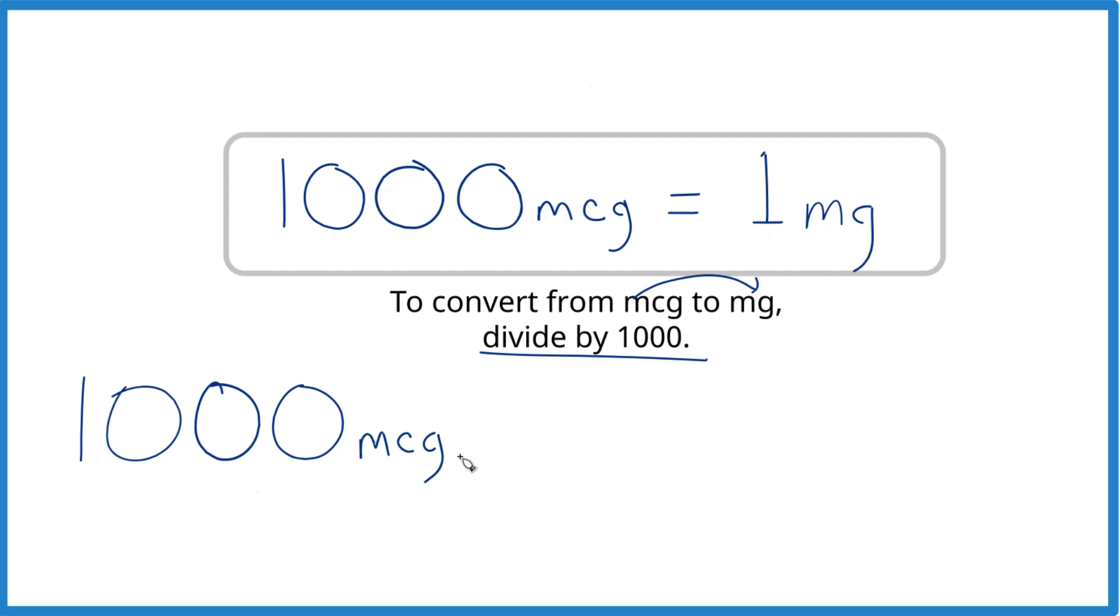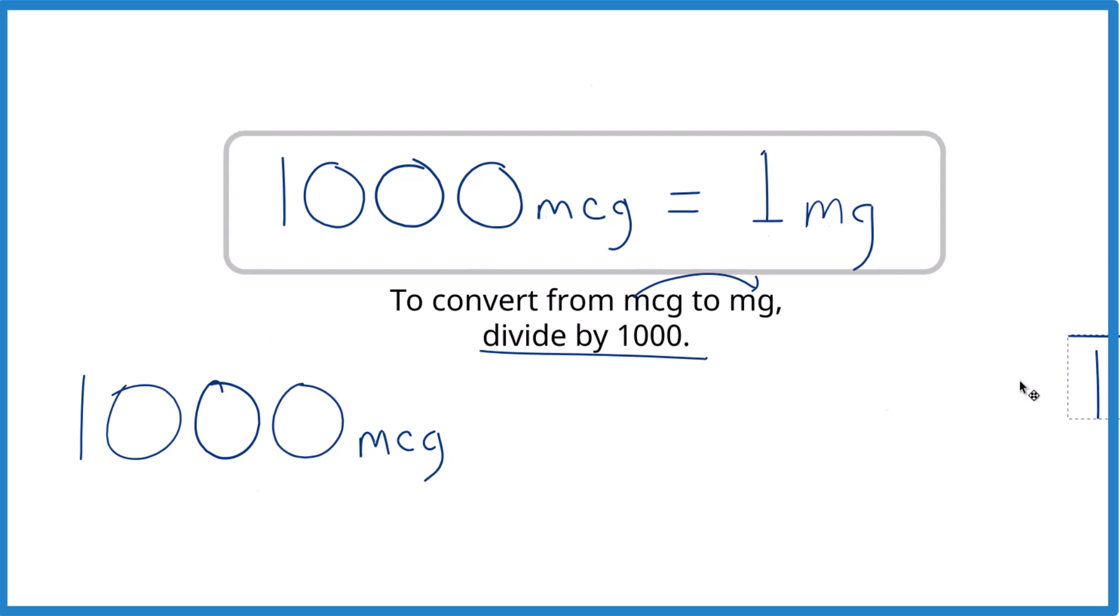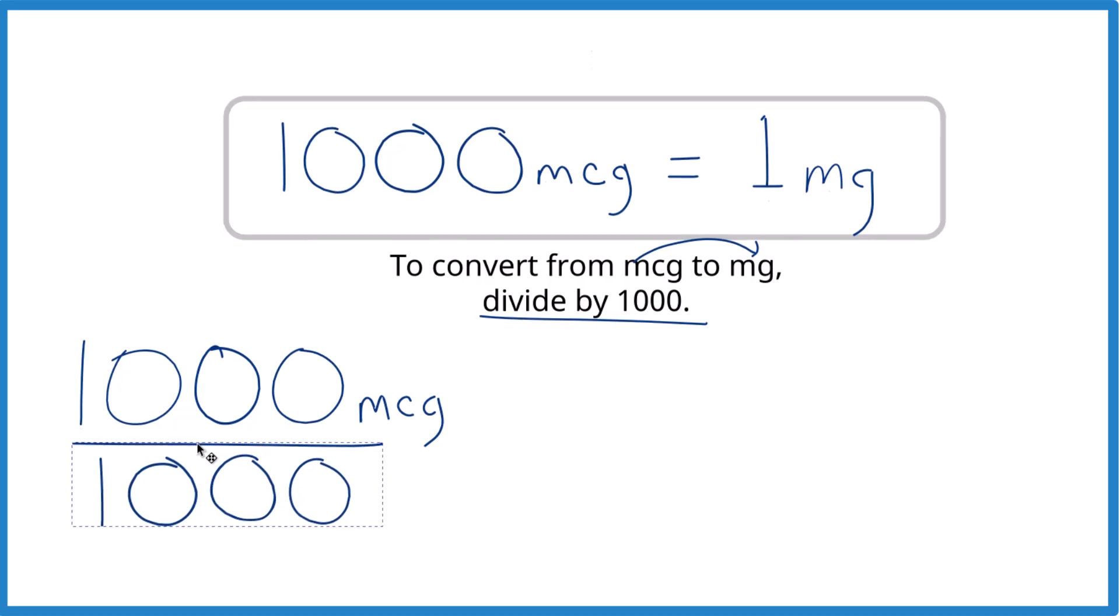Here, we have 1,000 micrograms. We could divide this by 1,000, and you'll see that we end up with one. That's because 1,000 micrograms equals one milligram. We already know that. We don't even need to work this out. But if we wanted to work it out, we divide by 1,000.